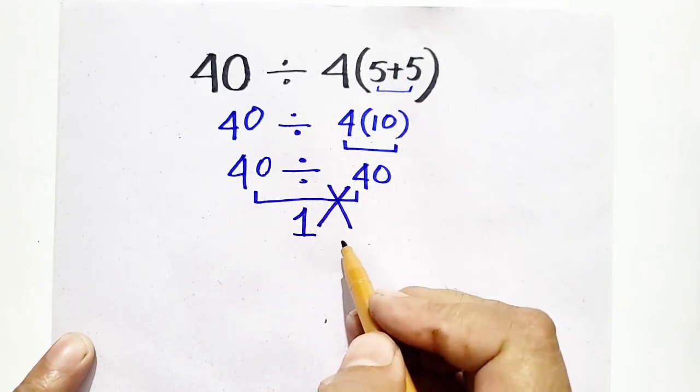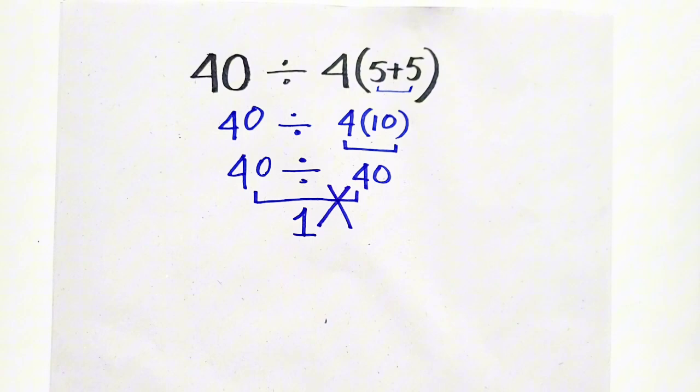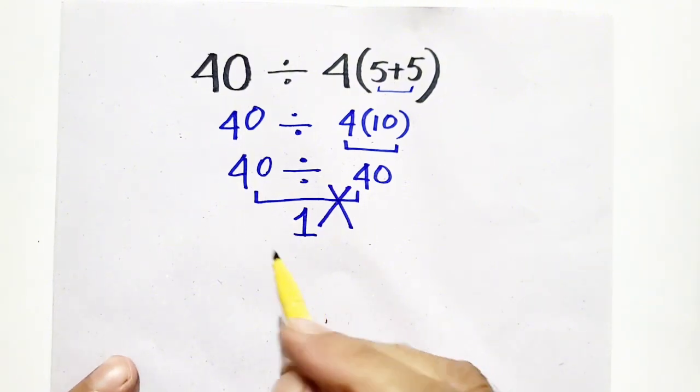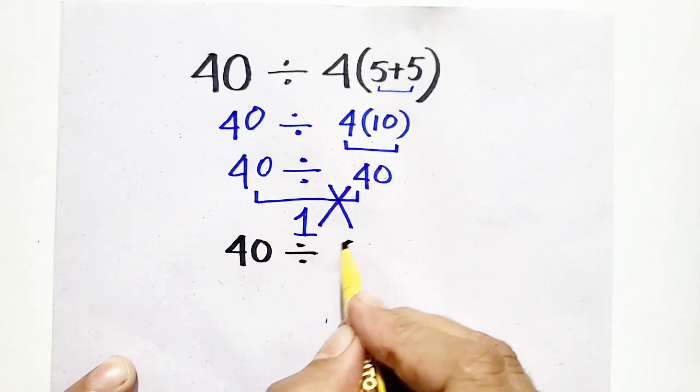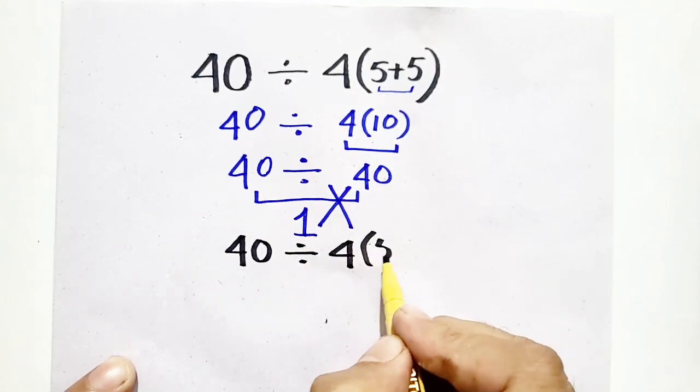But remember, it is not correct, so we have to solve it again. 40 divided by 4(5+5).